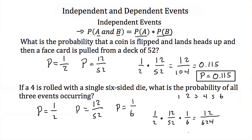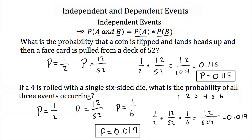12 divided by 624 is approximately 0.019. So the probability of all 3 events happening is 0.019, or a little bit less than a 2% chance.